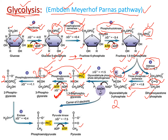Substrate-level phosphorylation is called so because the energy comes from the substrate itself. ATP is the energy currency of cells. Comparing 1,3-bisphosphoglycerate and 3-phosphoglycerate, the bisphosphate form has higher energy. That excess energy is transferred to ADP in the form of a phosphate group, forming ATP. Steps one and three are energy-consuming (ATP → ADP), while step seven is energy-generating (ADP → ATP).